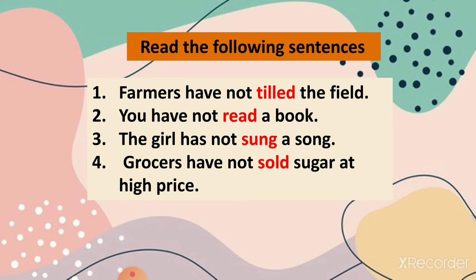Now let us make the affirmative examples into negative sentences. The sentence was 'farmers have tiled the field', so in negative form it will be 'farmers have not tiled the field'. You have not read a book. The girl has not sung a song. Grocers have not sold sugar at high price. So we have just added 'not' after has/have in the affirmative sentences to make them negative.